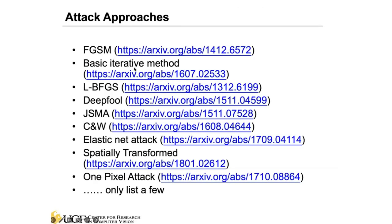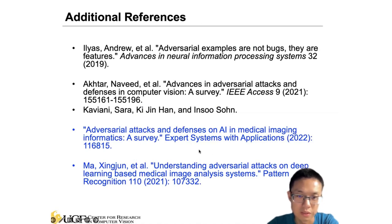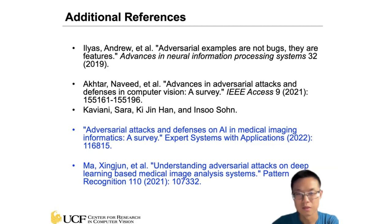Here are some references and papers for different adversarial attack approaches. These are typical common approaches for adversarial attacks, and there are also survey papers covering adversarial attack and defense approaches for machine learning models — specifically for medical image processing — which may help you understand different attack approaches and defense methods for medical image computing. That covers the part we had left from the last lecture.